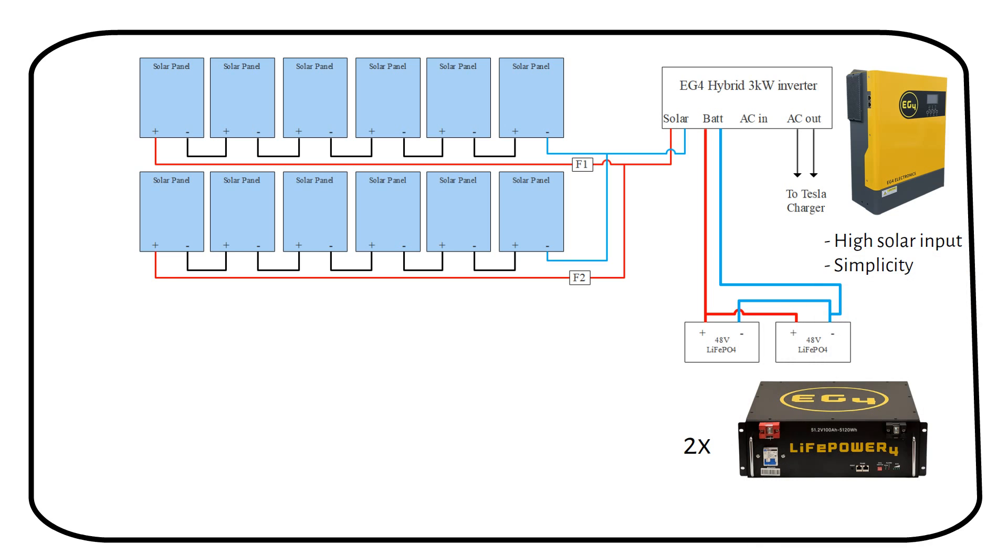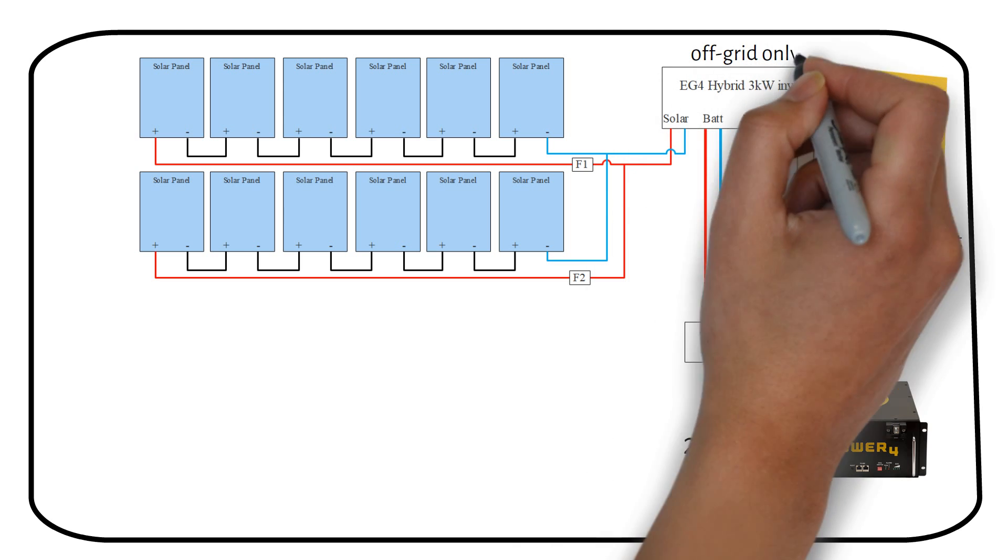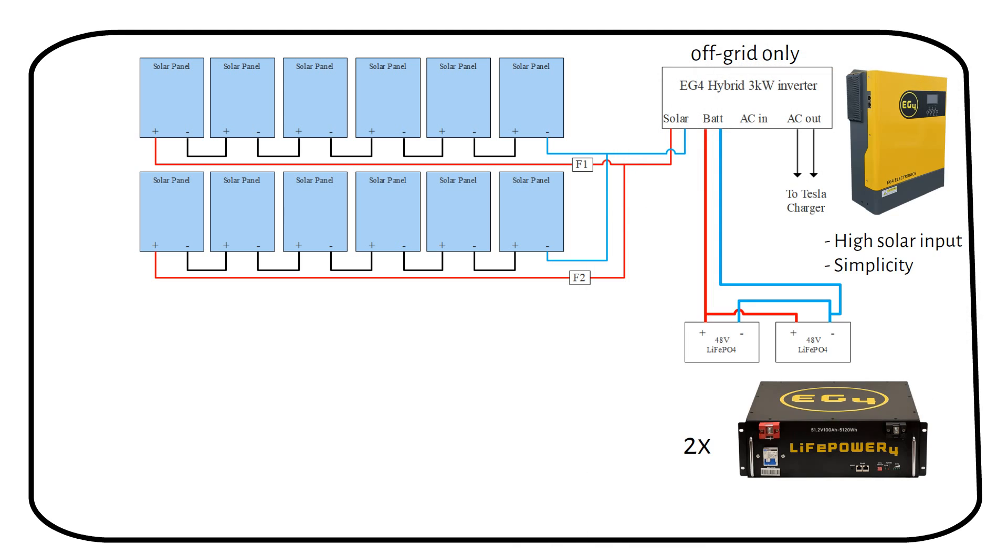The EG4 advantage lies in a straightforward setup and high solar input voltage. It's not made to connect to the main electricity grid, so it's an off-grid system, only for charging your Tesla or as an emergency backup to power your fridge and a few appliances.